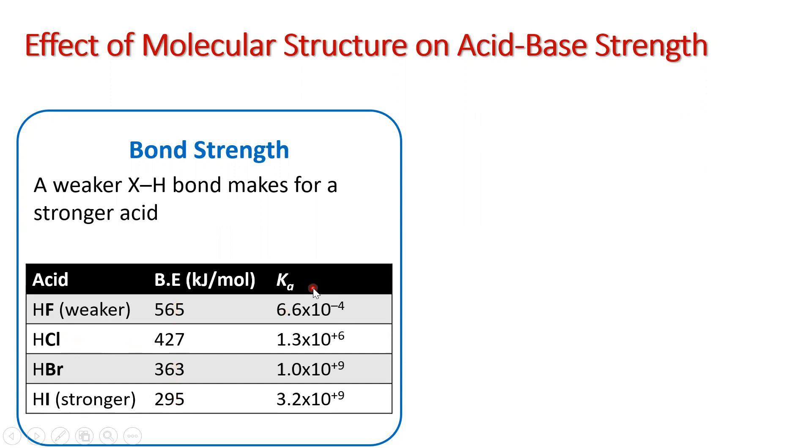Well, if we look at the Ka value, and really we just have to look at the exponent, the Ka value is increasing, and the larger the Ka value, the stronger the base, or sorry, the stronger the acid. So the stronger the bond, the weaker the acid. The weaker the bond, the stronger the acid.